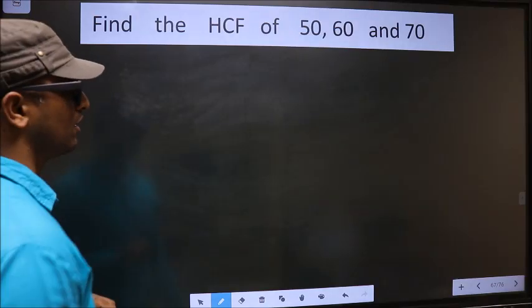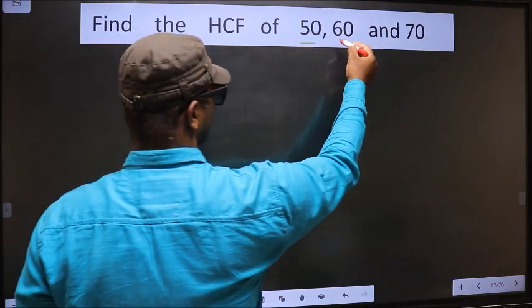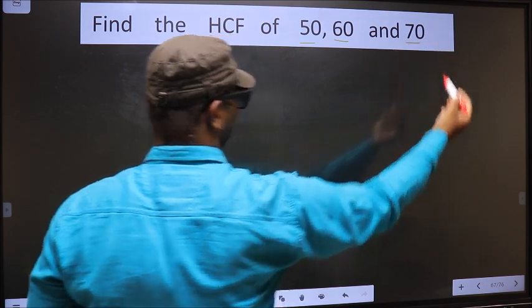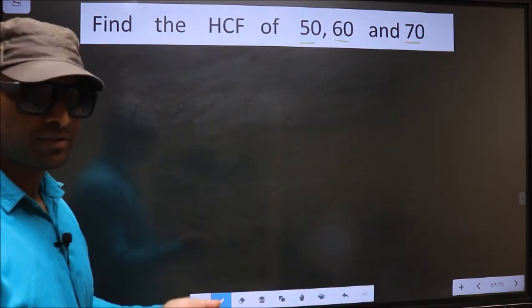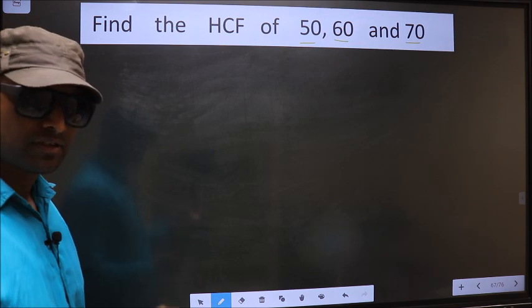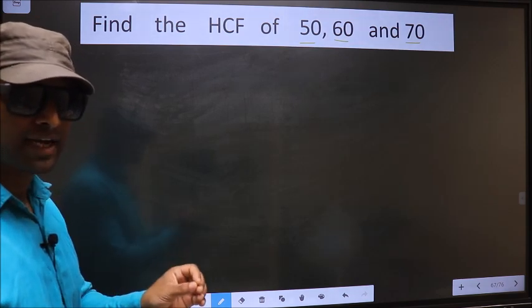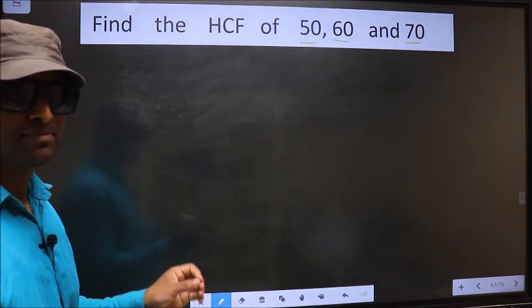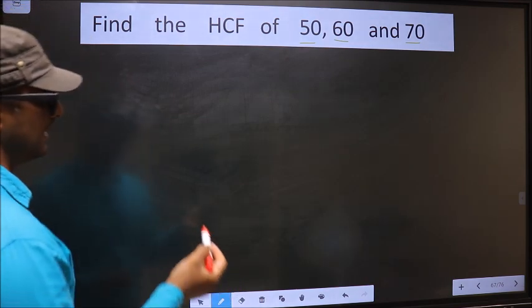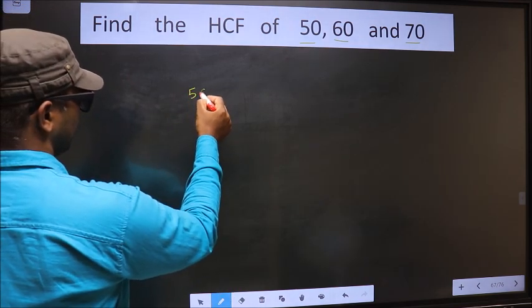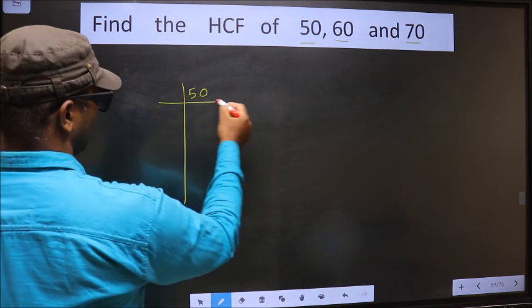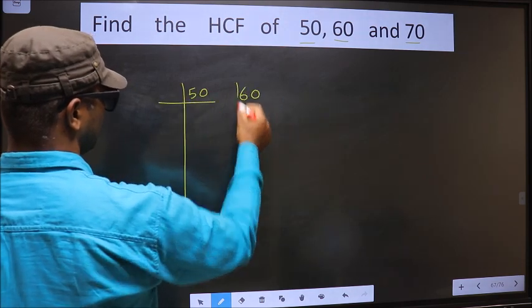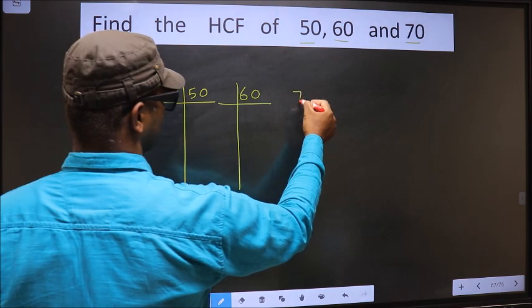Find the HCF of 50, 60 and 70. To find the HCF, first we should do the prime factorization of each number separately. That is 50, 60 and 70.